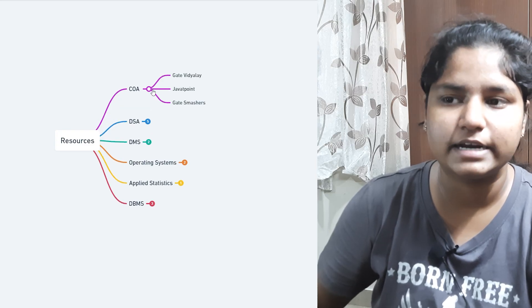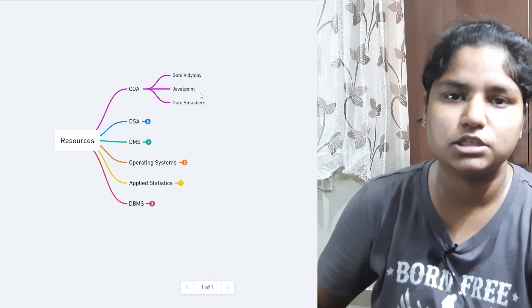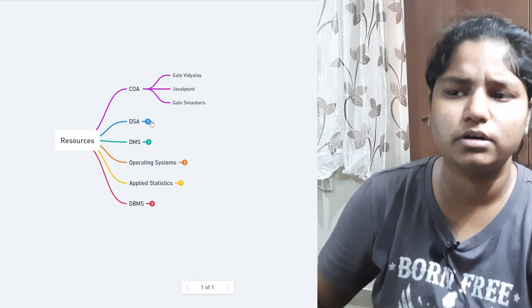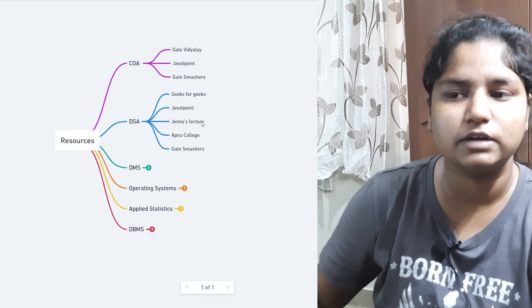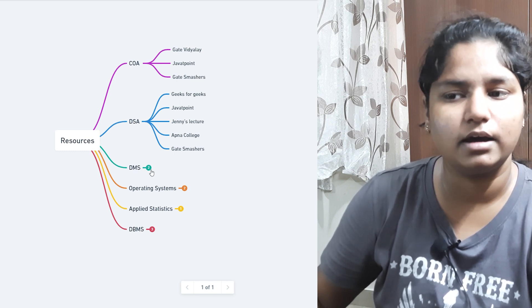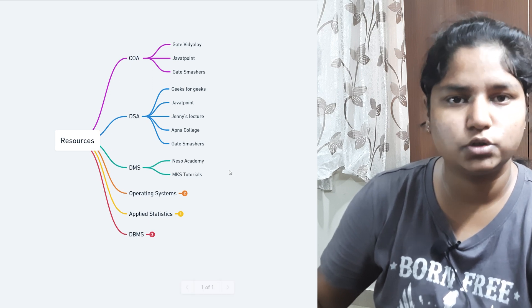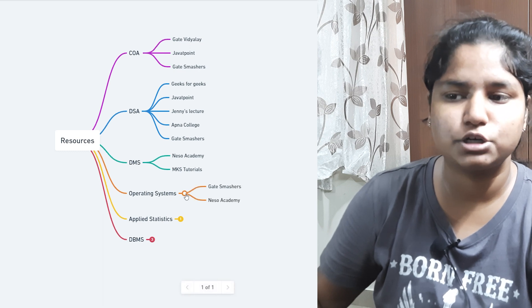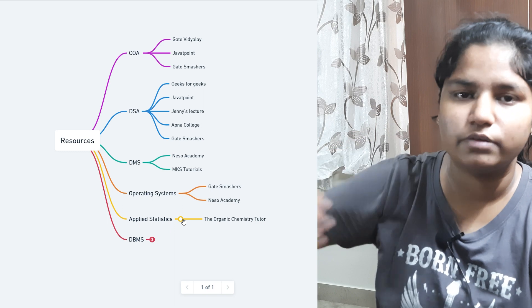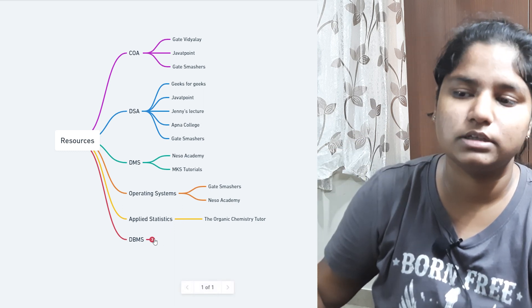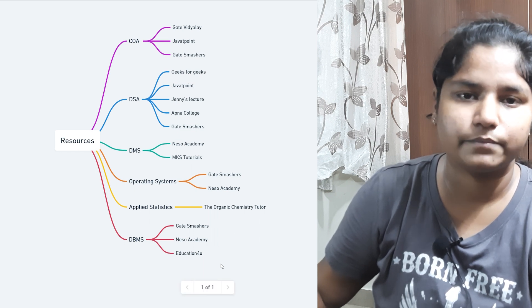For study resources: for COA, use GeeksForGeeks, JavaTPoint, and the Gate Smashers YouTube channel. For DSA, I've included five resources — GeeksForGeeks, JavaTPoint, Jenny's Lectures, Apna College, and Gate Smashers. For DMS, there are two YouTube playlists: Neso Academy and MKS Tutorials. For Operating System, use Gate Smashers and Neso Academy. For Applied Statistics I found one link, and for DBMS there are three YouTube playlists. All links are in the description. That's all for this video — comment below if you have any doubts. Thank you for watching!